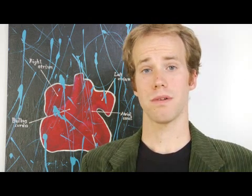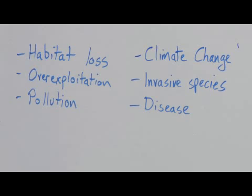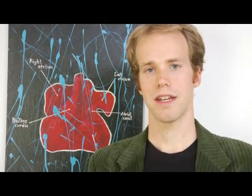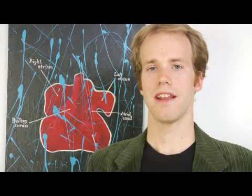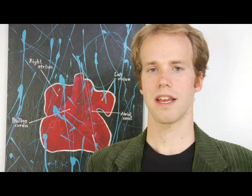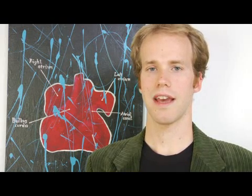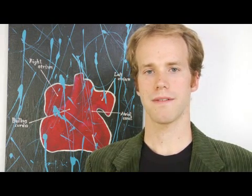You have over-exploitation — the harvesting of animals, maybe elephants for their tusks or for meat. Things that people need to eat, but the way that things are done now, a lot of times it's considered poaching and it's just to such a scale that the animals can't regenerate themselves fast enough.